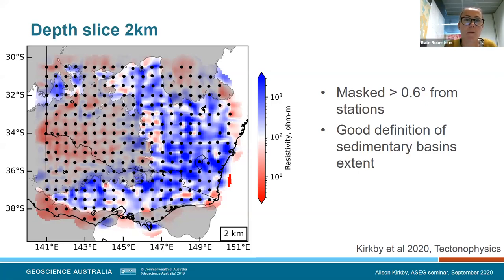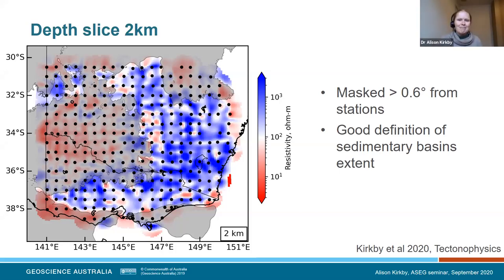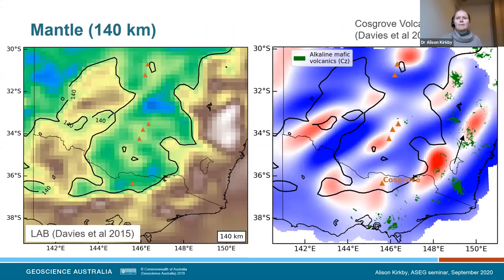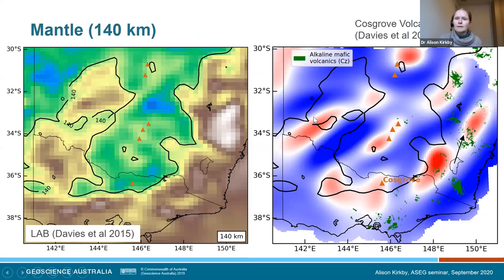Bob Musgrave asks: I'm wondering about the slight direction difference between the Australian plate absolute motion and the deep MT. Is it possible this reflects some flow in the asthenosphere itself? That's a good question. Possibly. I also wondered if it's related to the interaction between differences in the lithosphere-asthenosphere boundary — irregularities in the boundary interacting with that plate motion. I'm not really sure, but it's quite possible.